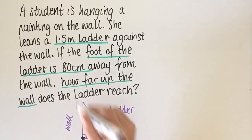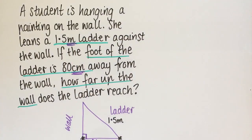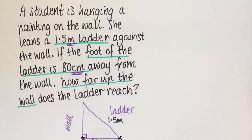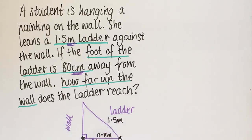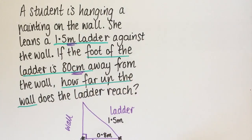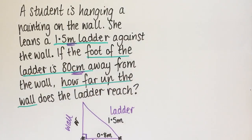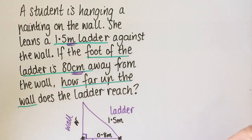Something to be mindful of is that the ladder is given in metres and the distance is given in centimetres — that's the way they're trying to trick you. So 80 centimetres is the same as 0.8 metres. What we're trying to find is how far up the wall the ladder reaches — that unknown side. I'm going to call it W to represent the wall, but you could call it H for height or X — it doesn't matter.